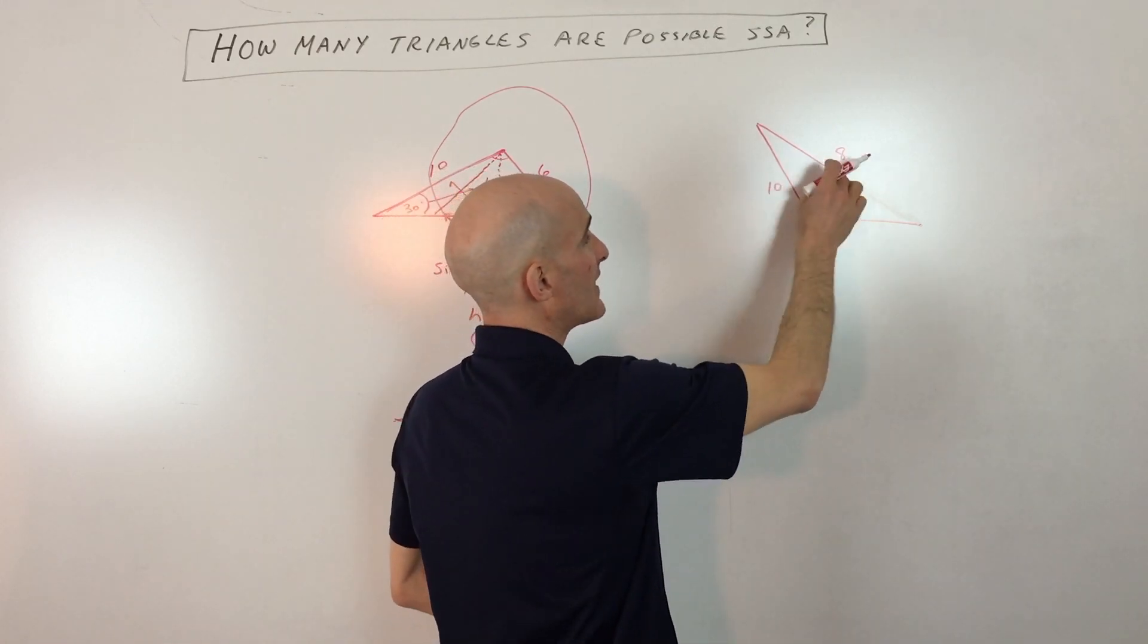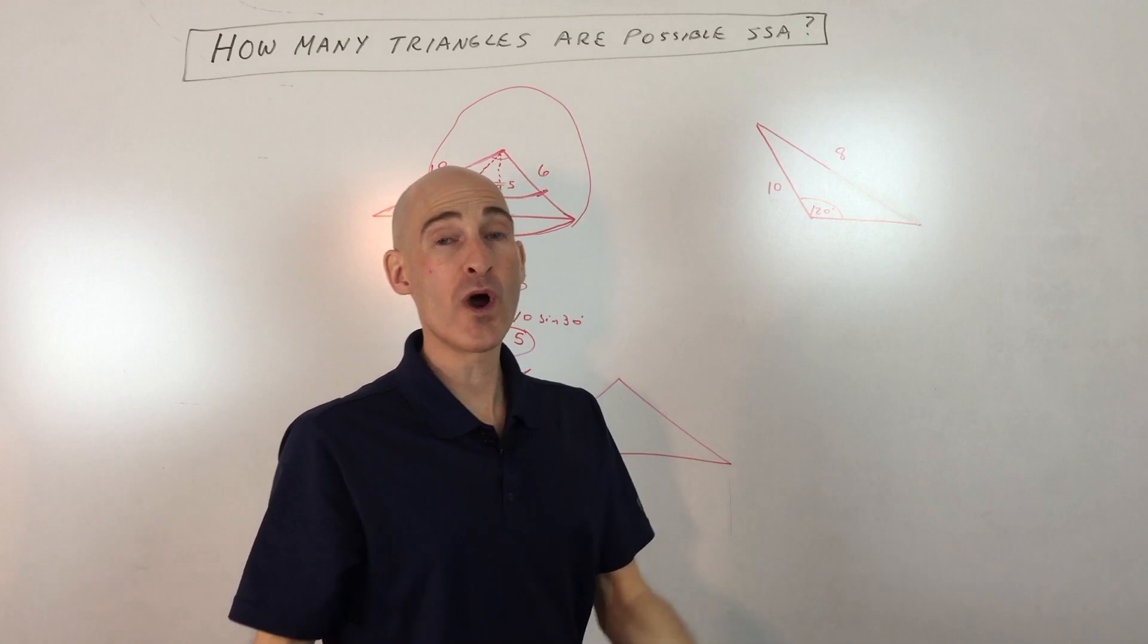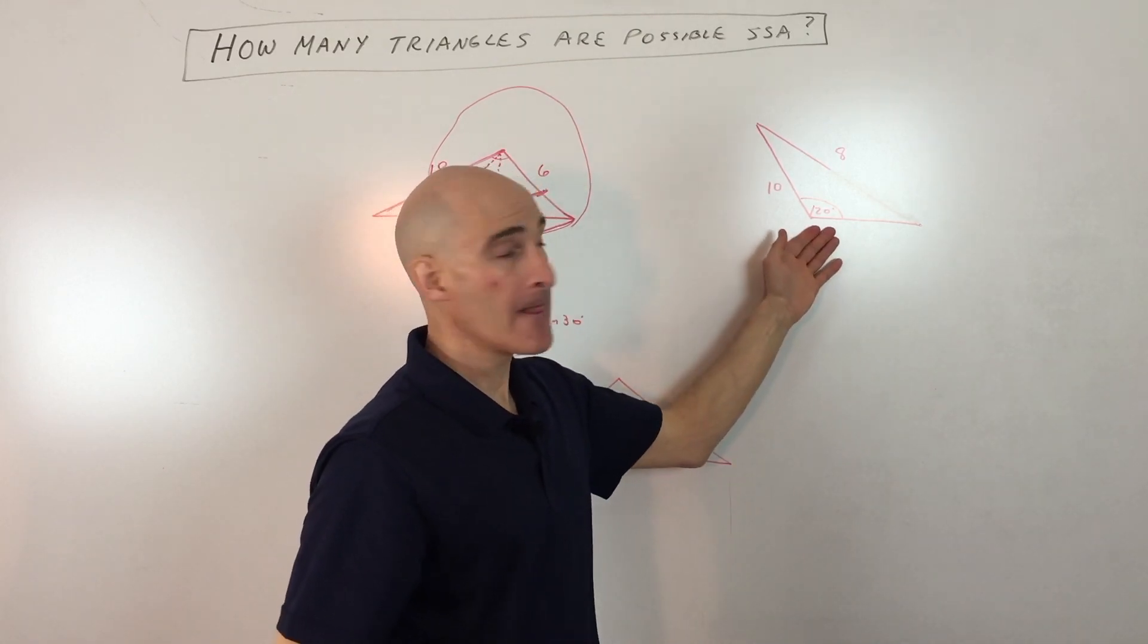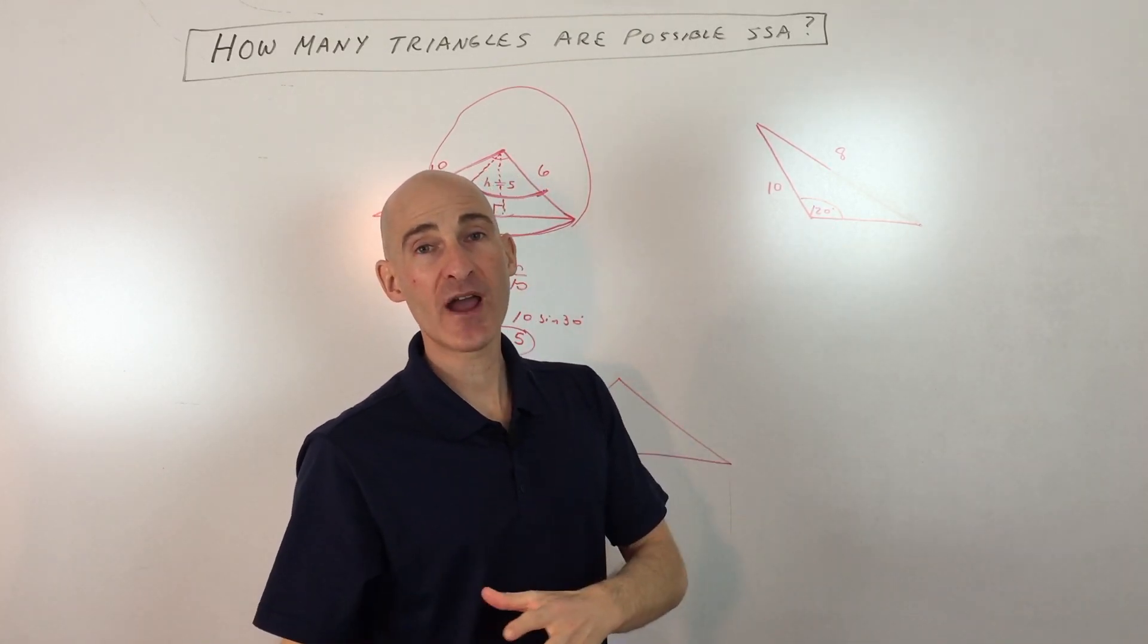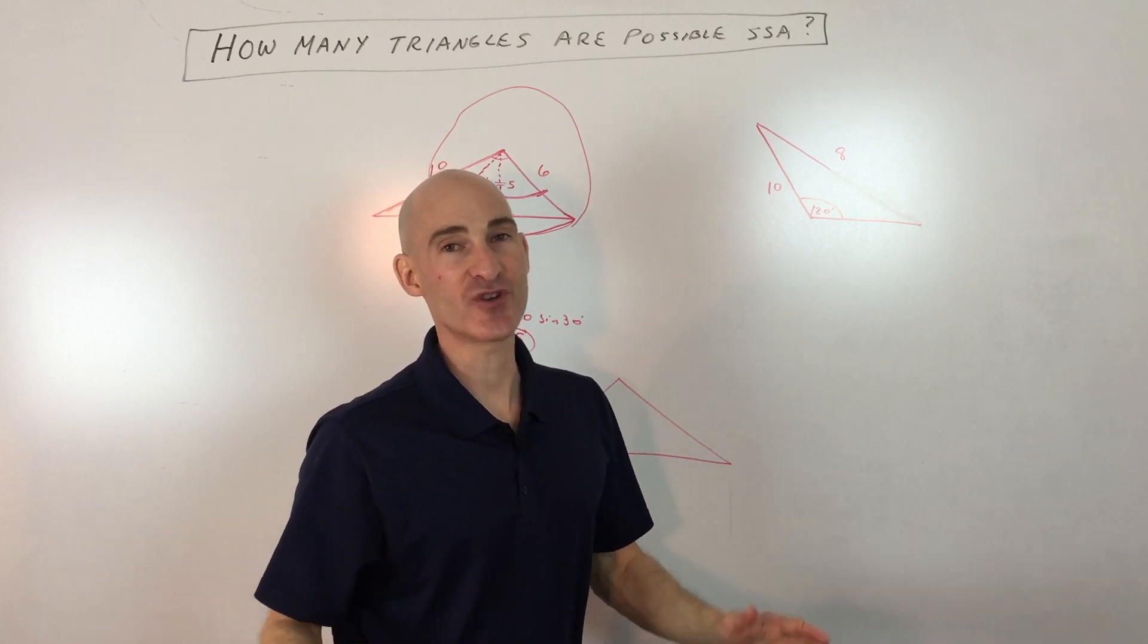If I reverse it, make this side 8 and this side 10, then there would just be one triangle possible. So when it's an obtuse angle given like this, there's either one triangle or no triangles, but not two triangles.